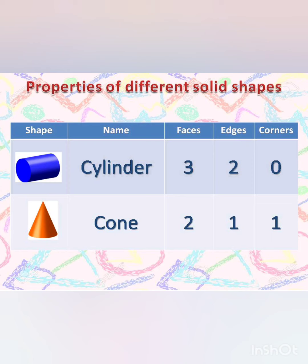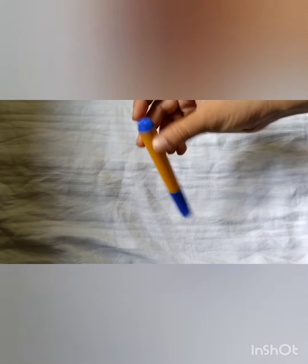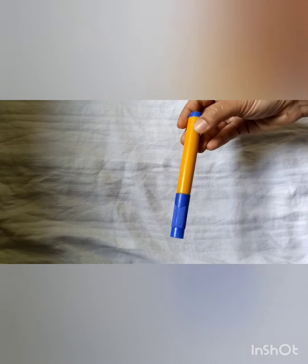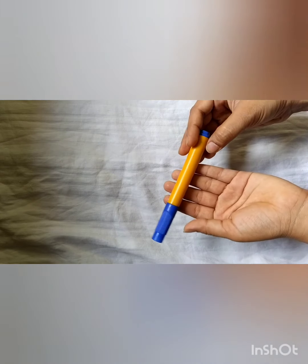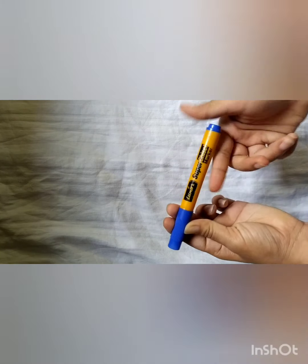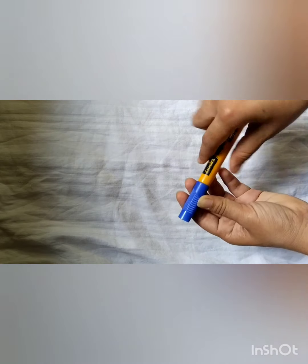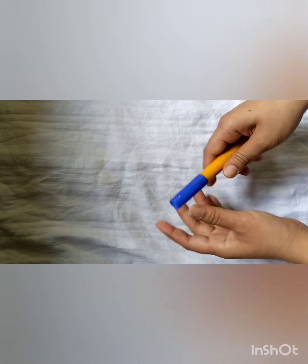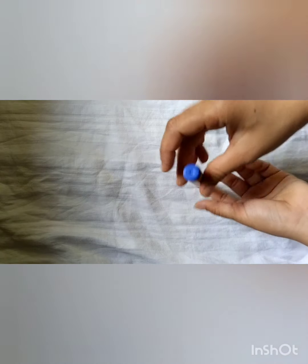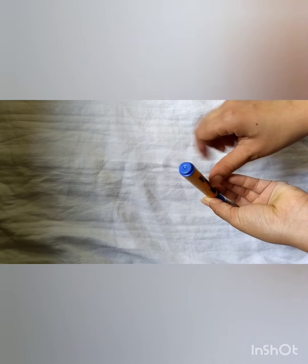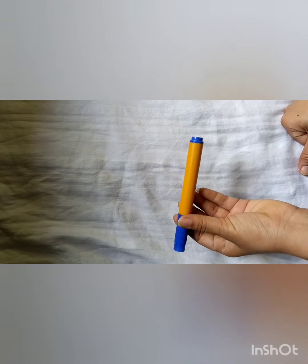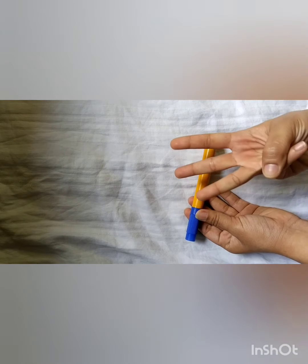Let's observe the next shape, which is cylinder. A cylinder has three faces, two edges, and zero corners. This pen is an example of a cylinder. As you can see, it has one curved face, one flat face on the top, and one flat face on the bottom. So a cylinder has three faces.